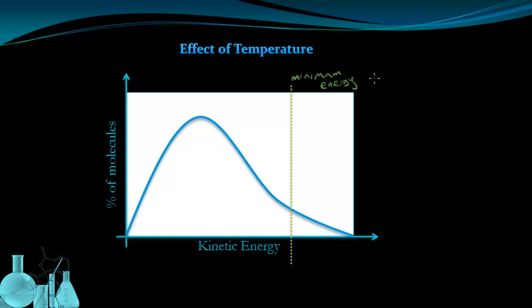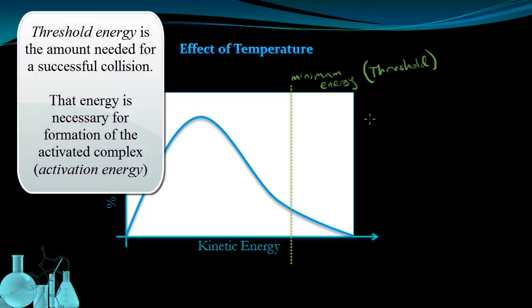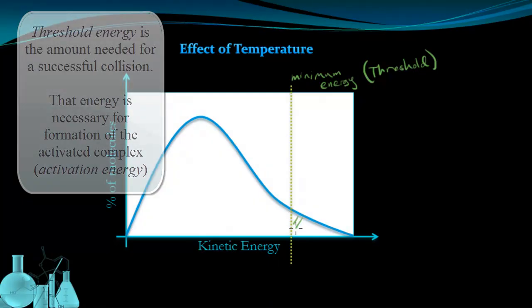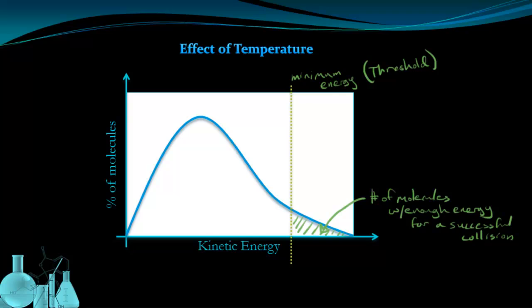This dashed line represents the minimum amount of energy needed for a successful collision. On a potential energy diagram, we call this the activation energy, but this is a kinetic energy diagram and it has a different name, although it represents essentially the same thing. We call this the threshold energy. And what this means is, at whatever temperature this is currently at, this area under the curve to the right of this line represents the total number of molecules with enough energy for a successful collision.